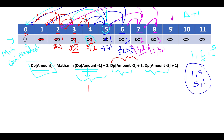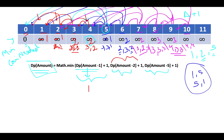For i=9: one step back gives 3 plus 1 equals 4. Two steps back to position 7 gives 2 plus 1 equals 3. Five steps back gives 2 plus 1 equals 3. Minimum of 4, 3, 3 is 3, so dp[9] = 3. For i=10: one step back gives 3 plus 1 equals 4. Two steps back gives 3 plus 1 equals 4. Five steps back to position 5 gives 1 plus 1 equals 2. Minimum is 2, so dp[10] = 2 — two coins of denomination 5.